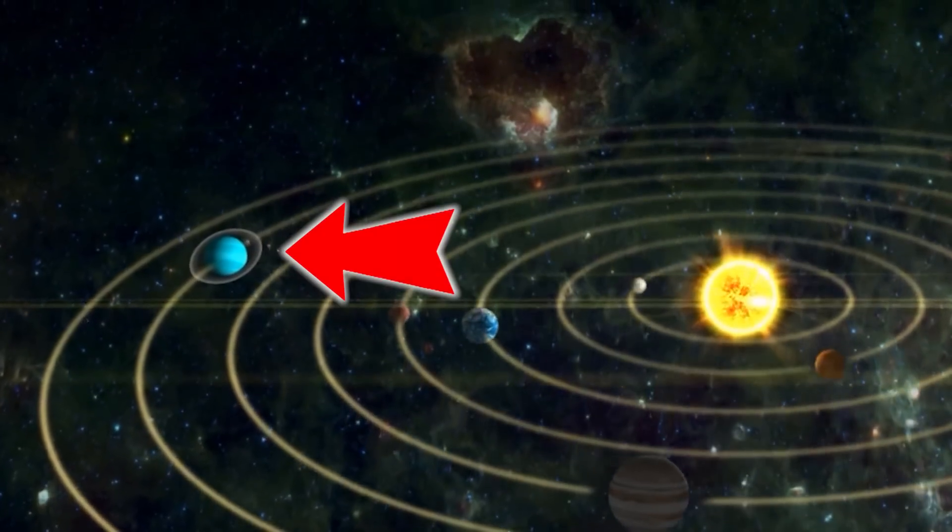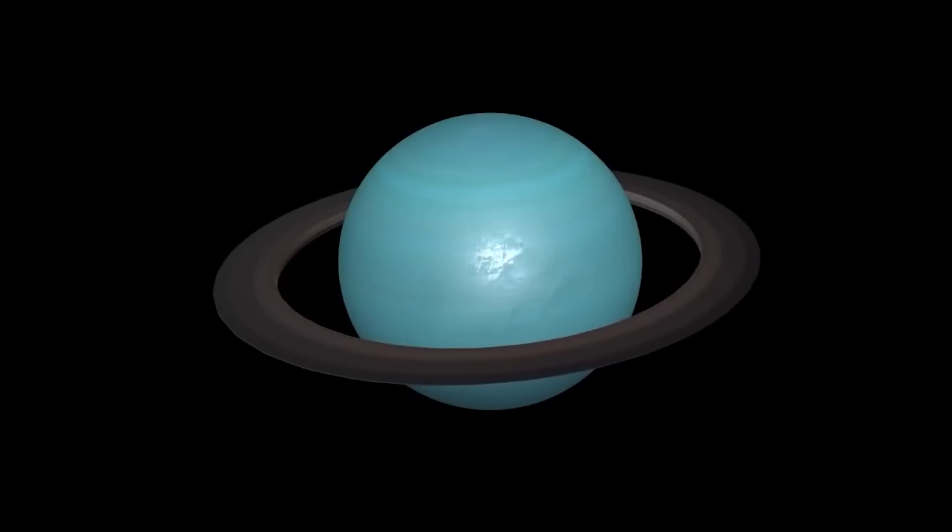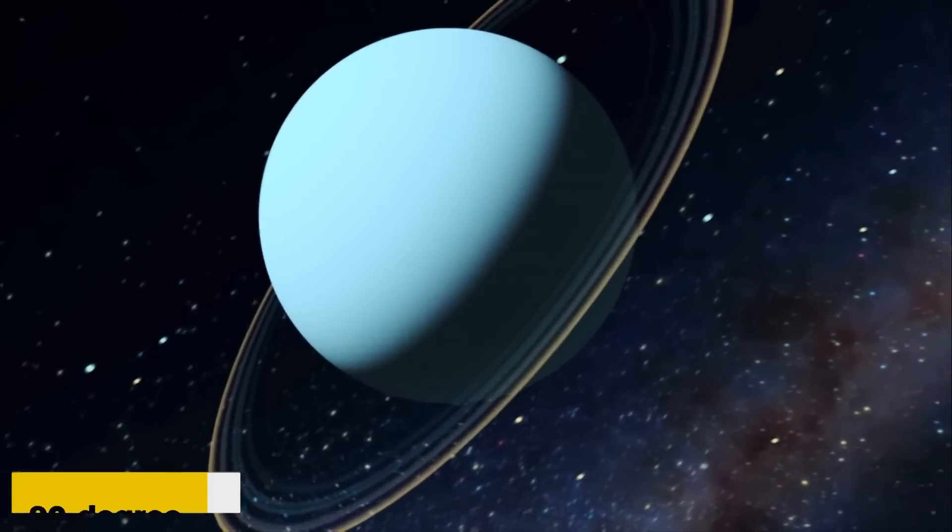The seventh planet from the Sun, Uranus, is unique. It rotates on its side at roughly a 90-degree angle from the plane of its orbit.